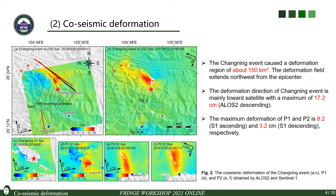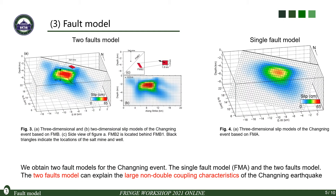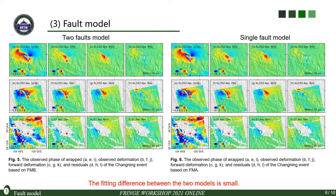The figure shows the co-seismic deformation of the Changlin, P1 and P2 observed by ALOS-2 and Sentinel-1. The Changlin event caused a maximum deformation of 17.2 centimeters. We obtained two fault models for the Changlin event: the single-fault model and the two-fault model. The two-fault model can explain the large non-double couple characteristics of the Changlin earthquake. The two figures show the modeled deformation of the two models, and we can see that the fitting difference between them is small.